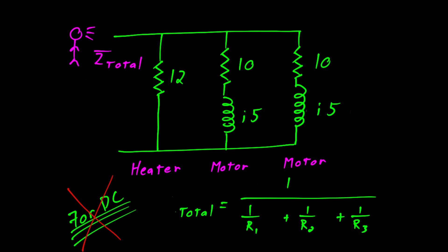And you'll see I have a line over the top because impedance is a vector. So the total impedance is equal to 1 over the reciprocal of the impedances. Where Z1 is the resistor all by itself, Z2 is the series combination of the 10 ohm resistor and the J5 ohm inductor, and Z3 is the other motor.